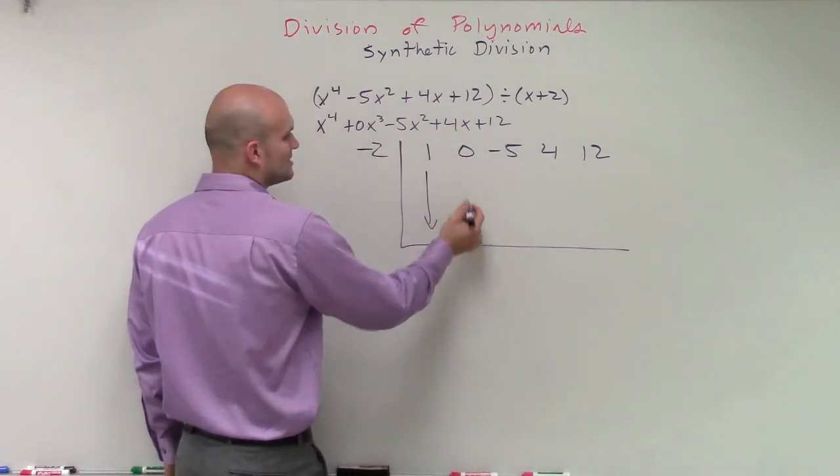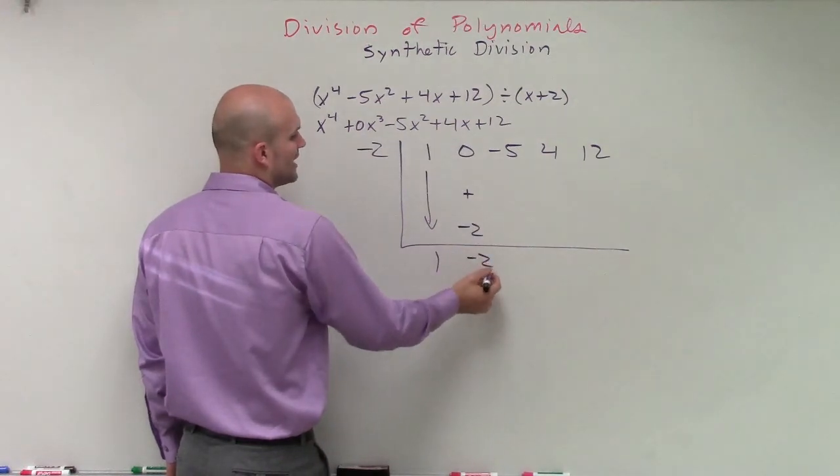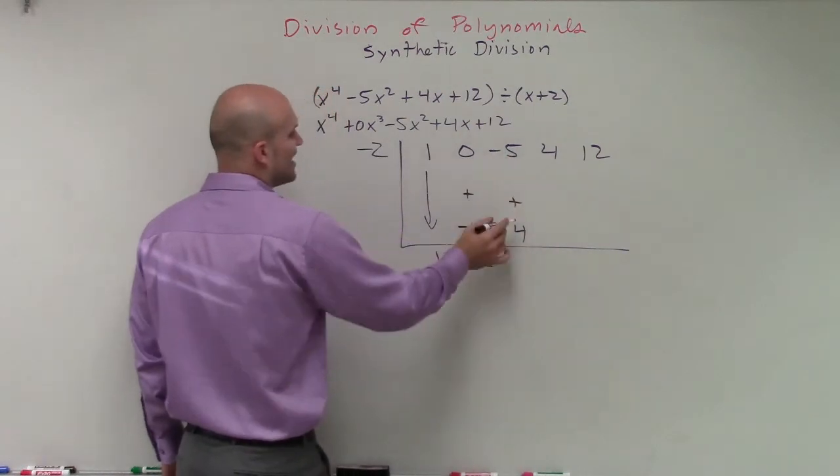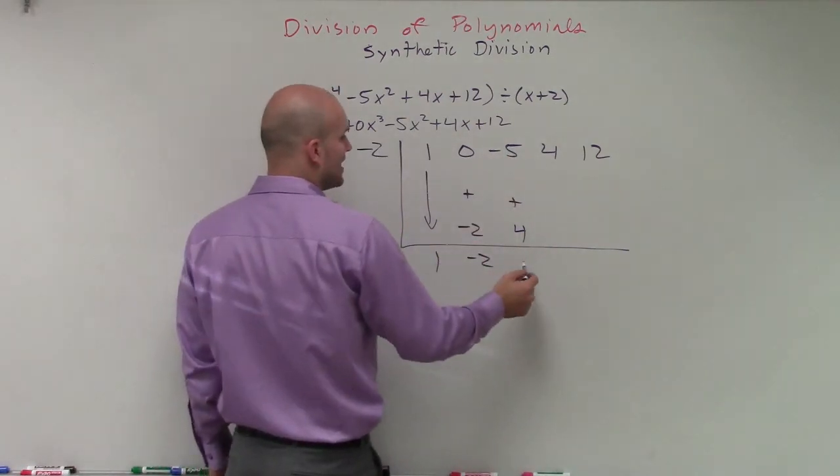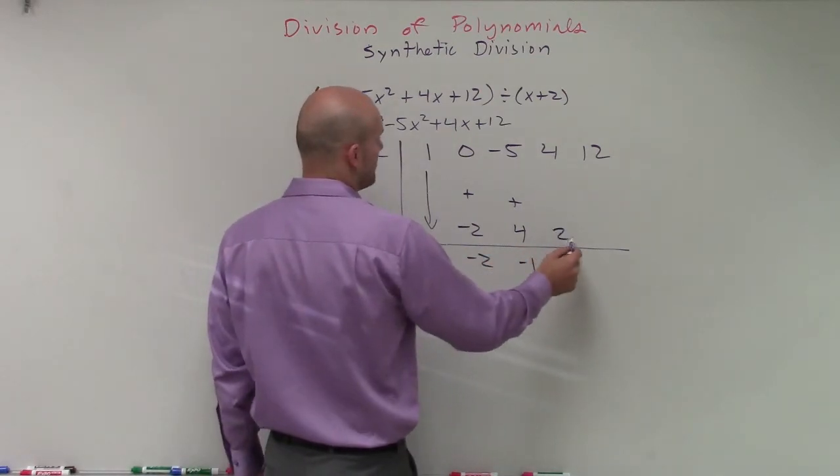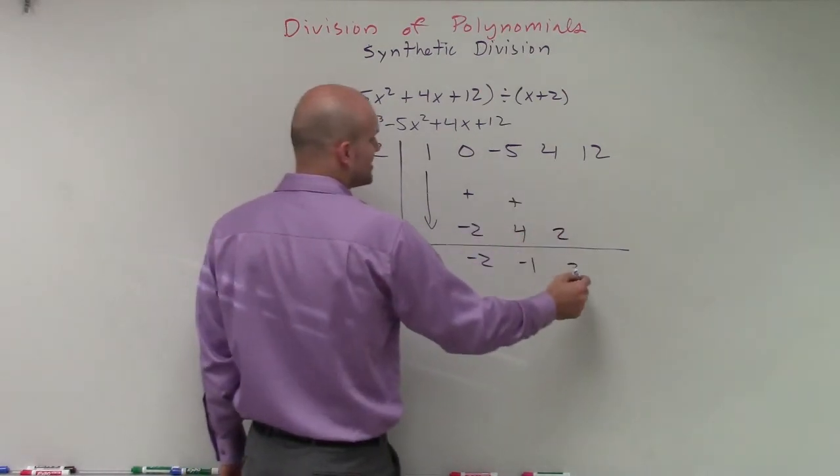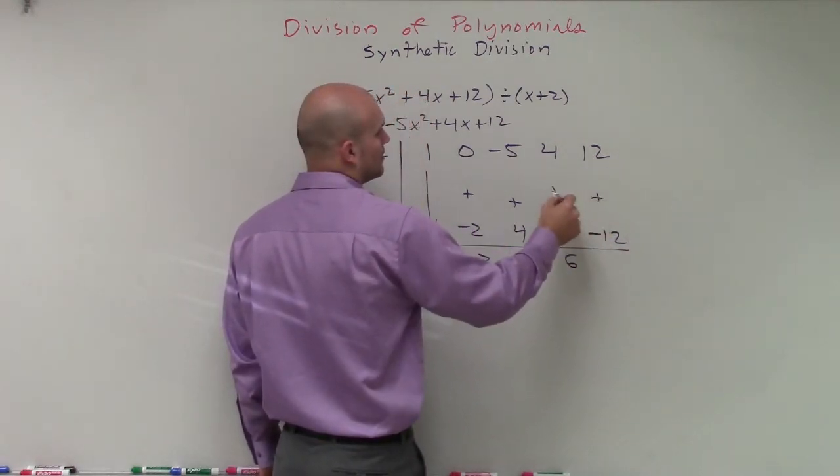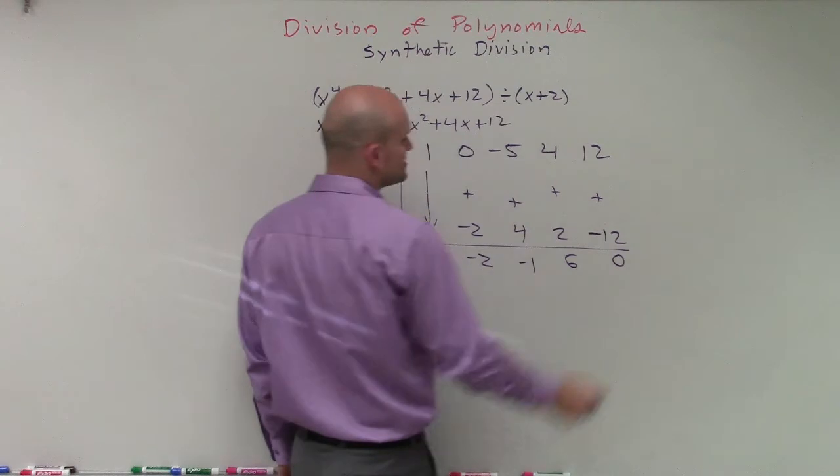0 plus negative 2 is going to be negative 2. Negative 2 times negative 2 is a positive 4. Negative 5 plus 4 is going to be a negative 1. Negative 1 times negative 2 is a positive 2. 4 plus 2 is 6. 6 times negative 2 is negative 12. 12 plus negative 12 is 0.